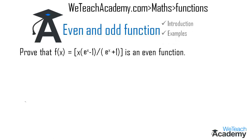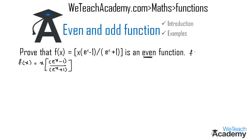Here we have to prove that f(x) = x · (eˣ - 1) / (eˣ + 1) is an even function. The given function is f(x) = x · (eˣ - 1) / (eˣ + 1). For it to be an even function it must satisfy the condition f(-x) = f(x).